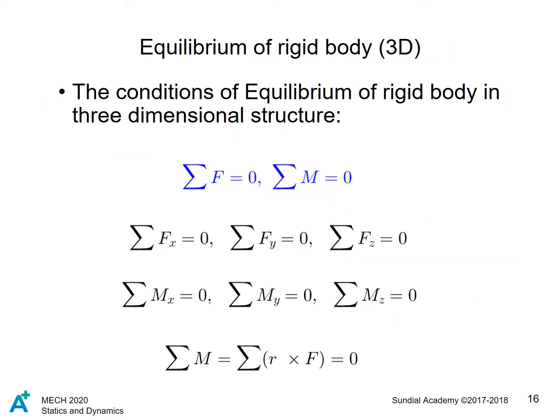Rigid body equilibrium in 3D involves the same balance of moment and force equations as in 2D, but includes a new Z component in both equations.